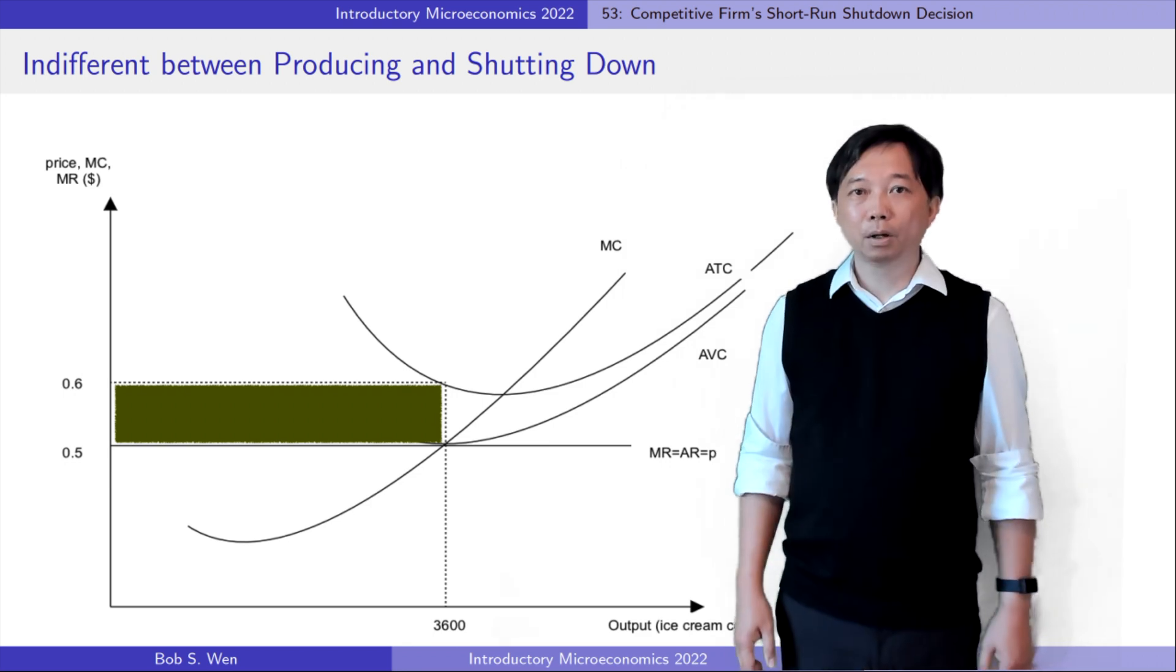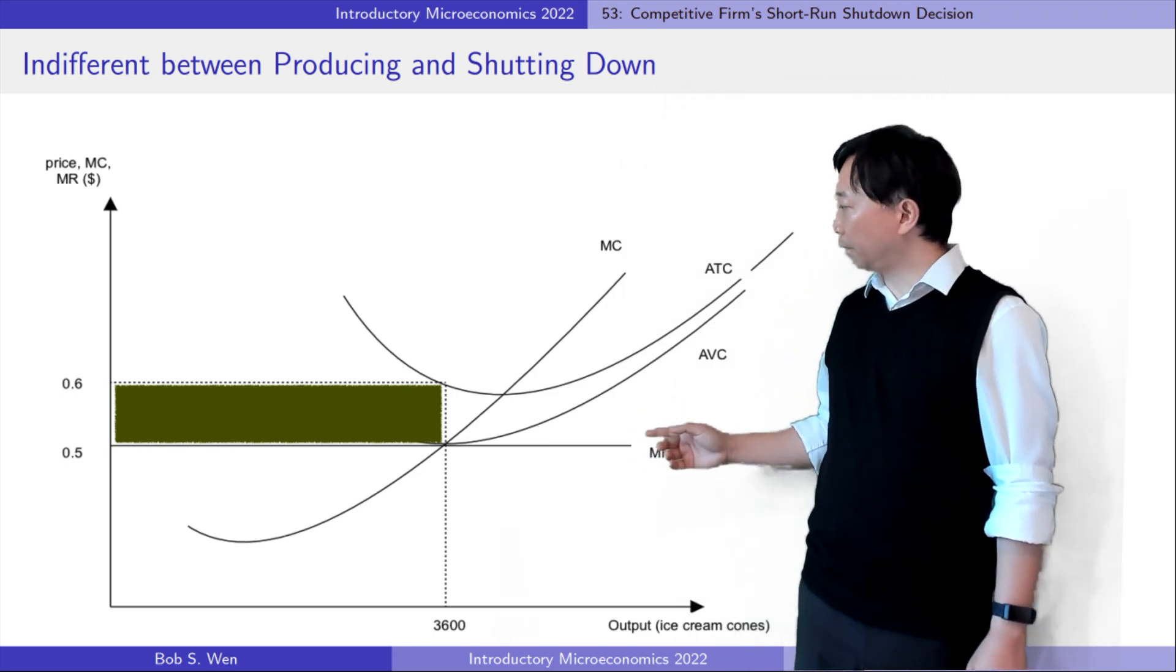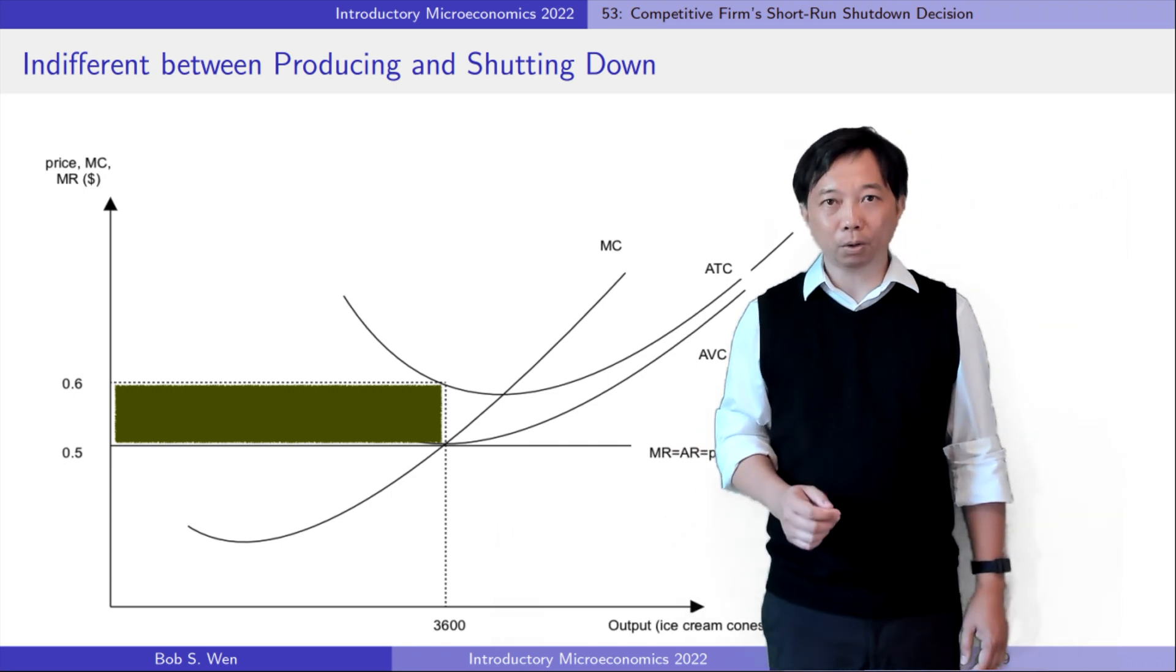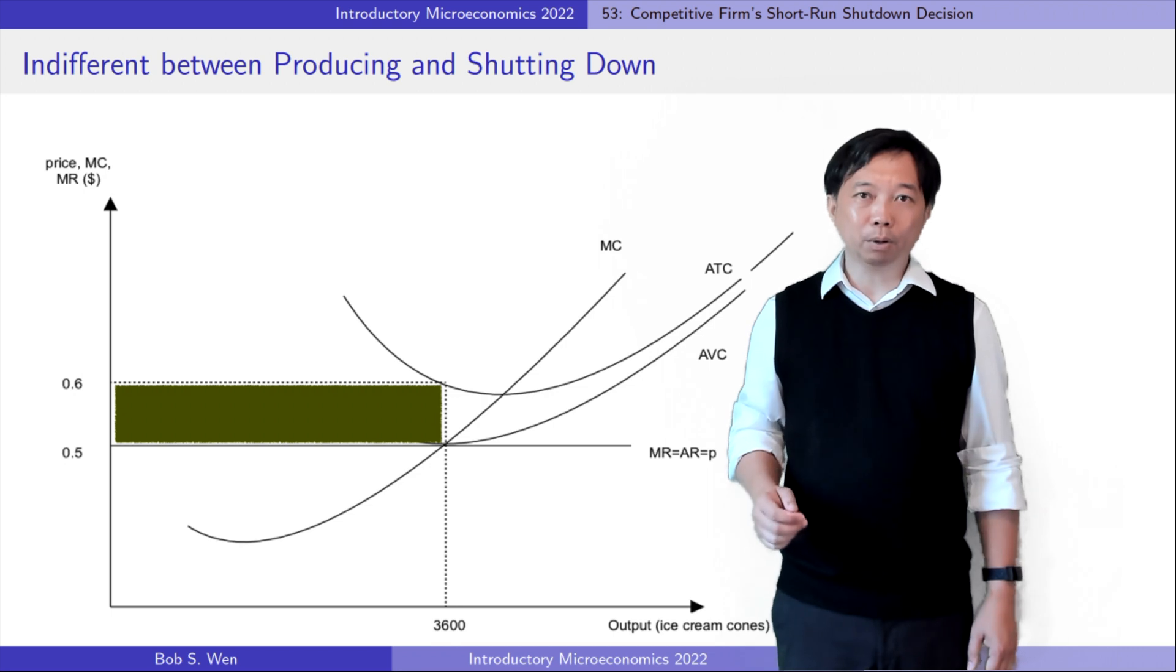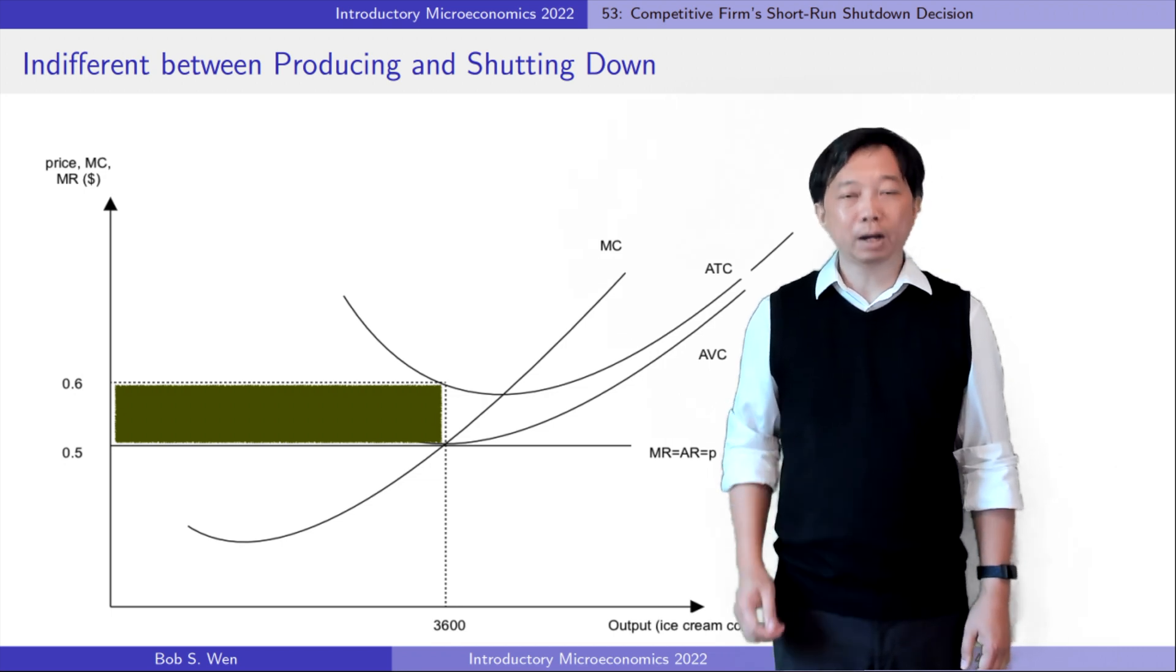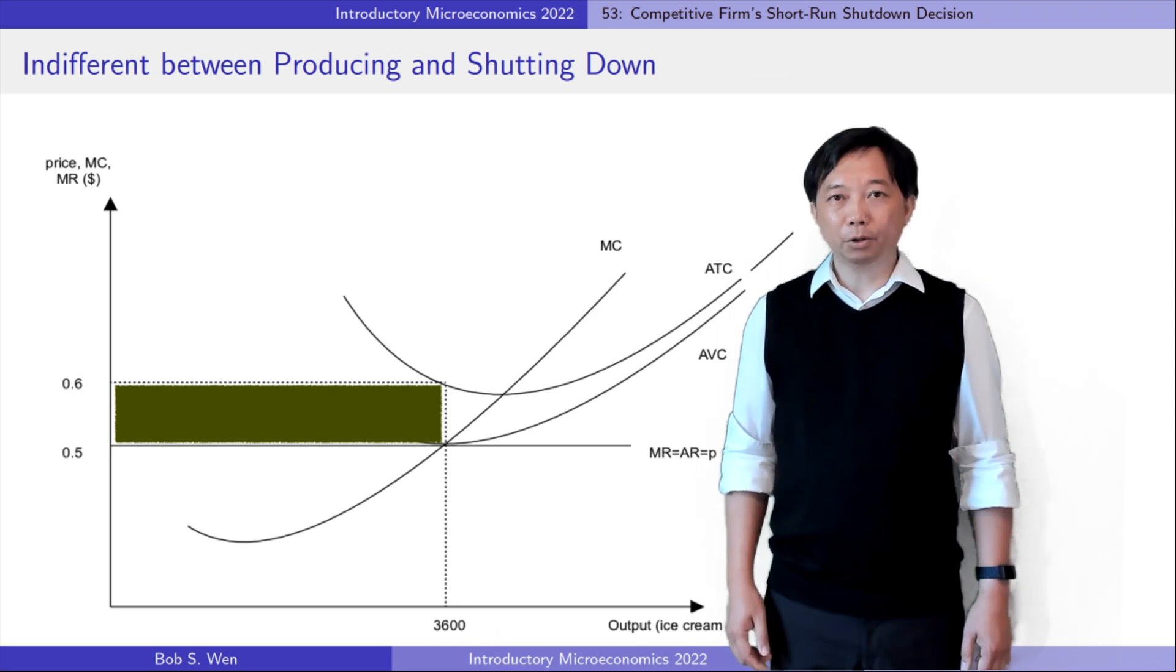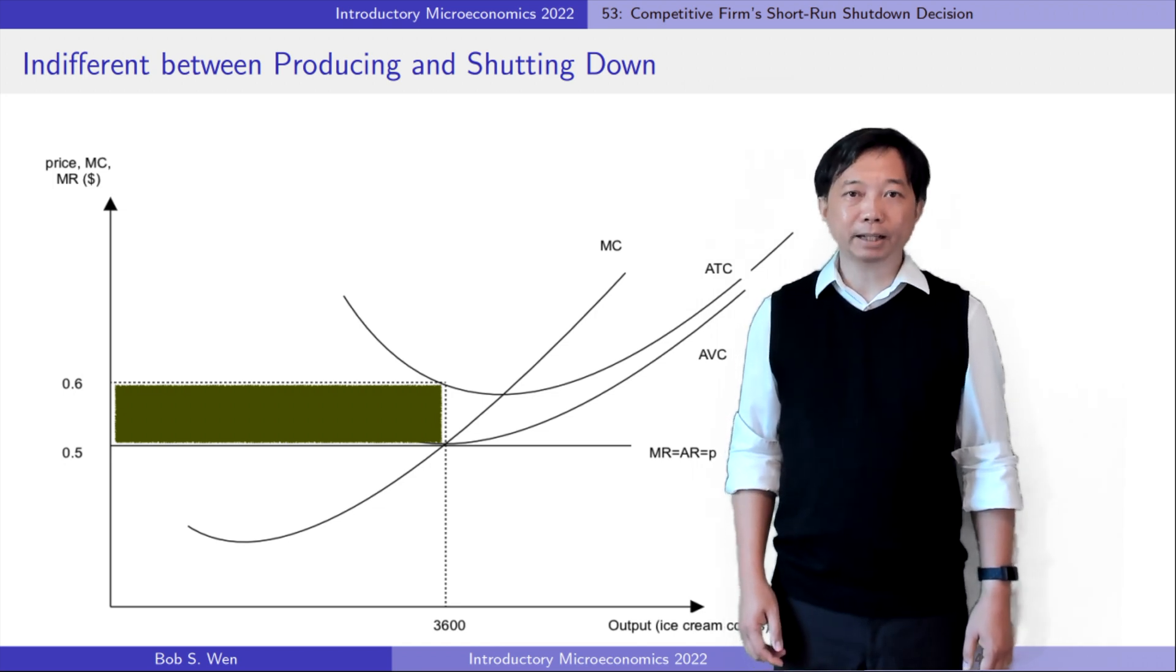We can also see from the graph that if the firm produces an output level between zero and the optimal level, the firm is worse off because the loss is larger. So, producing nothing is better than any points between nothing and 3600.